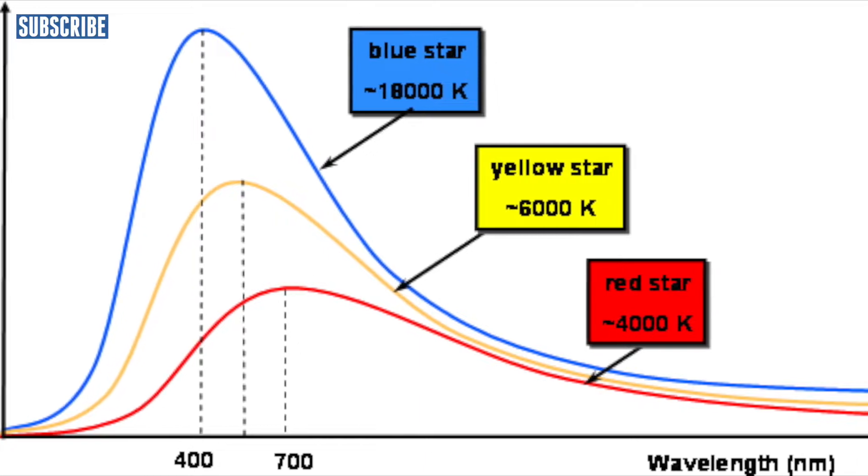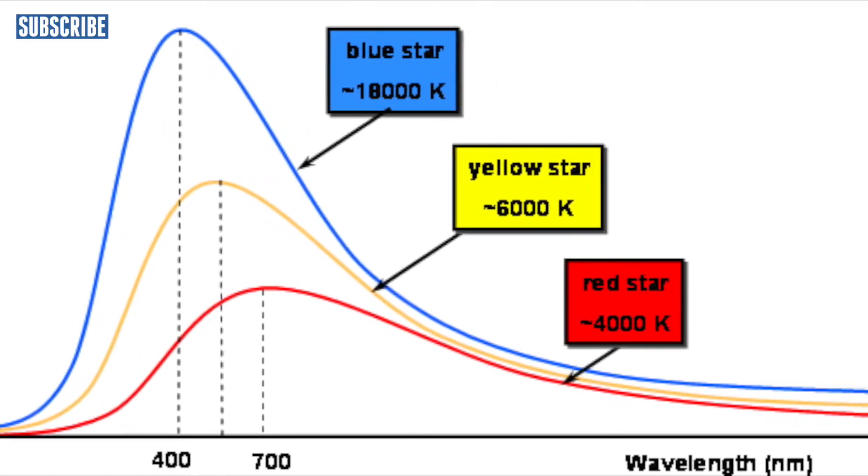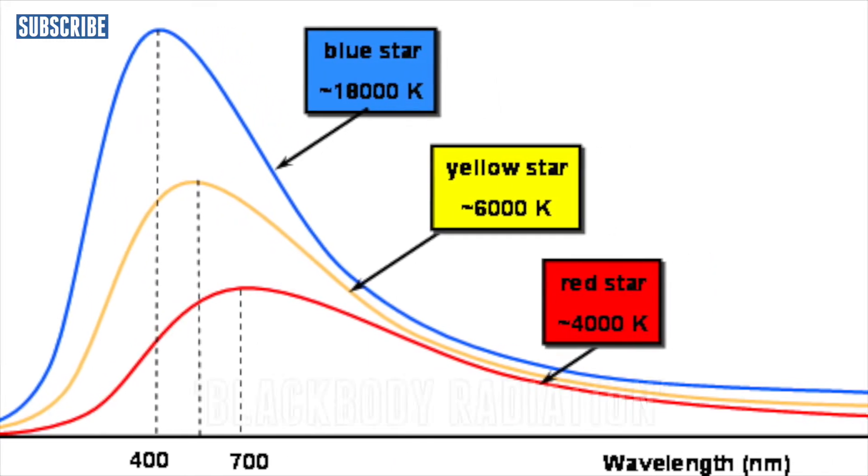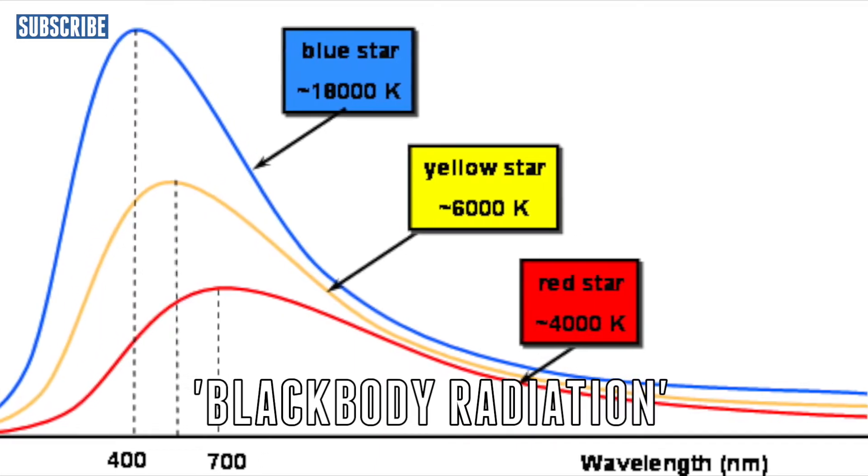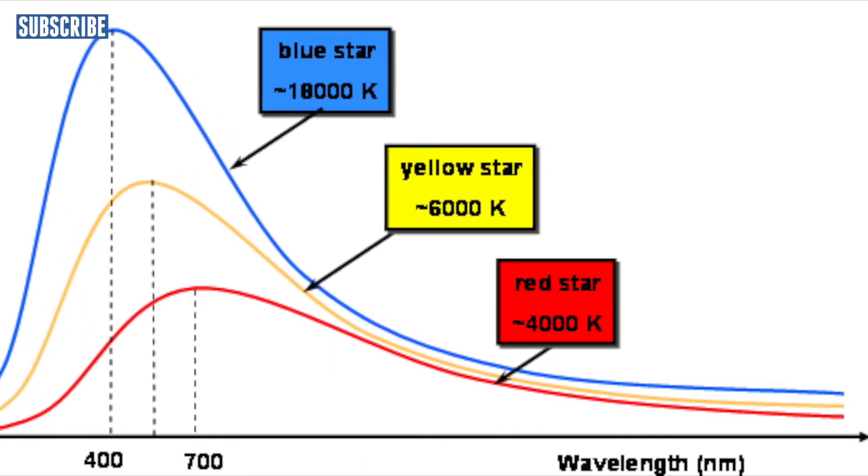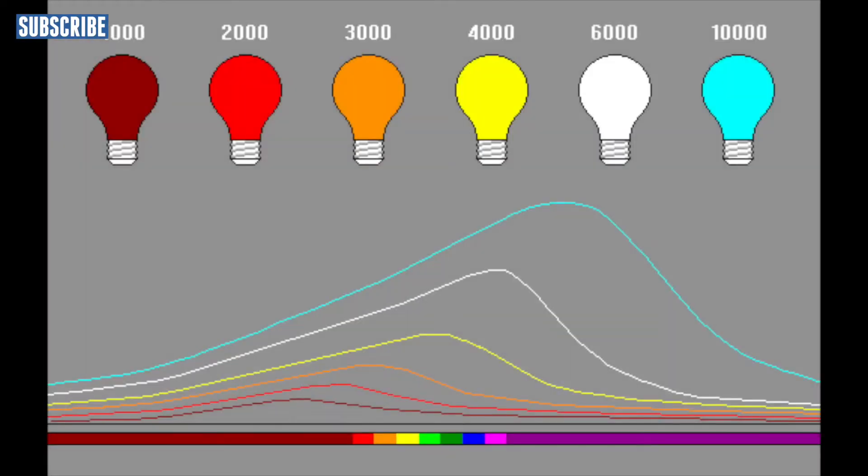They continued to examine the various temperatures and colours and came up with a name for this and it's called black body radiation. It seems like the stars with cooler temperatures have energy that is radiated in the red tones of the electromagnetic colour spectrum, while those that were hotter temperatures had the energy that radiated in the blue or white tones of the electromagnetic colour spectrum.